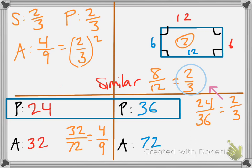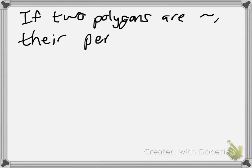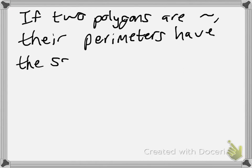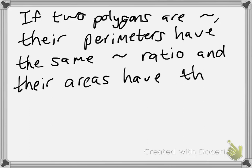This is just one example and doesn't prove anything, but we can generalize: if two polygons are similar, their perimeters have the same similarity ratio, and their areas have the square of the similarity ratio.